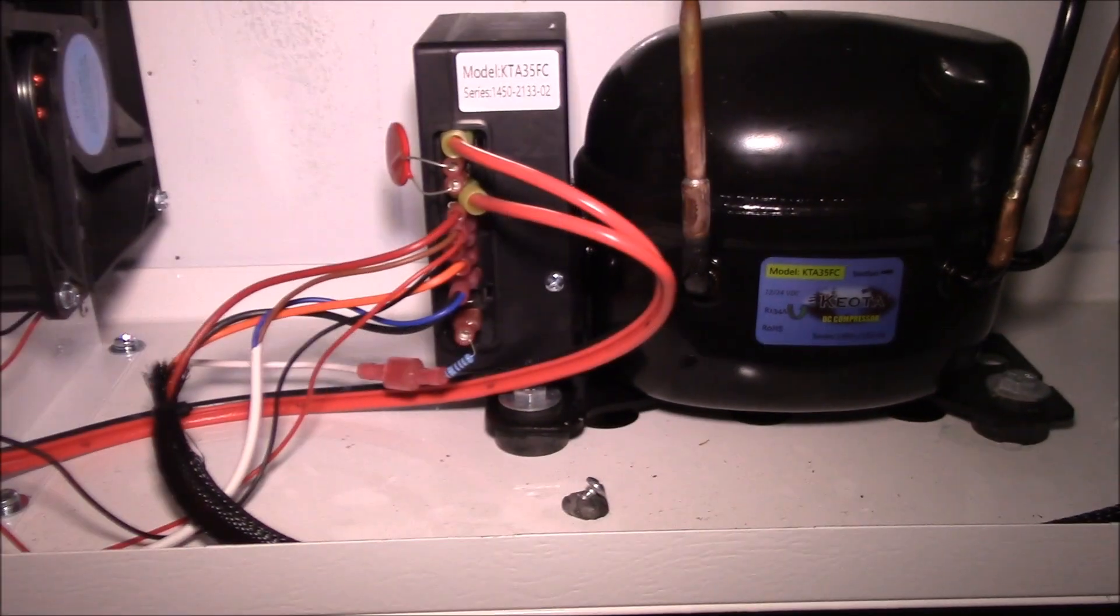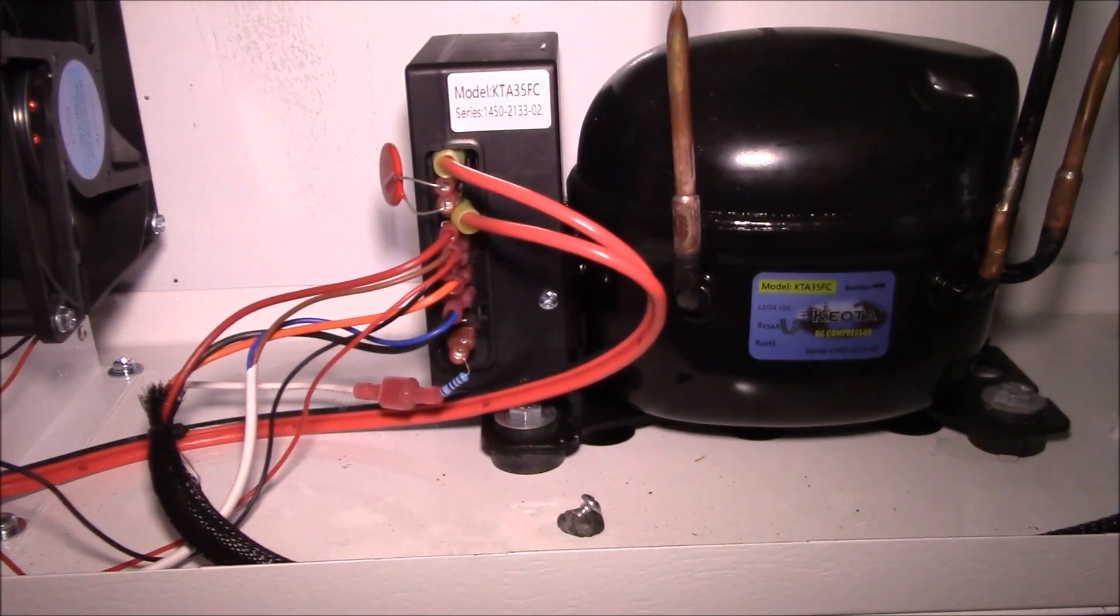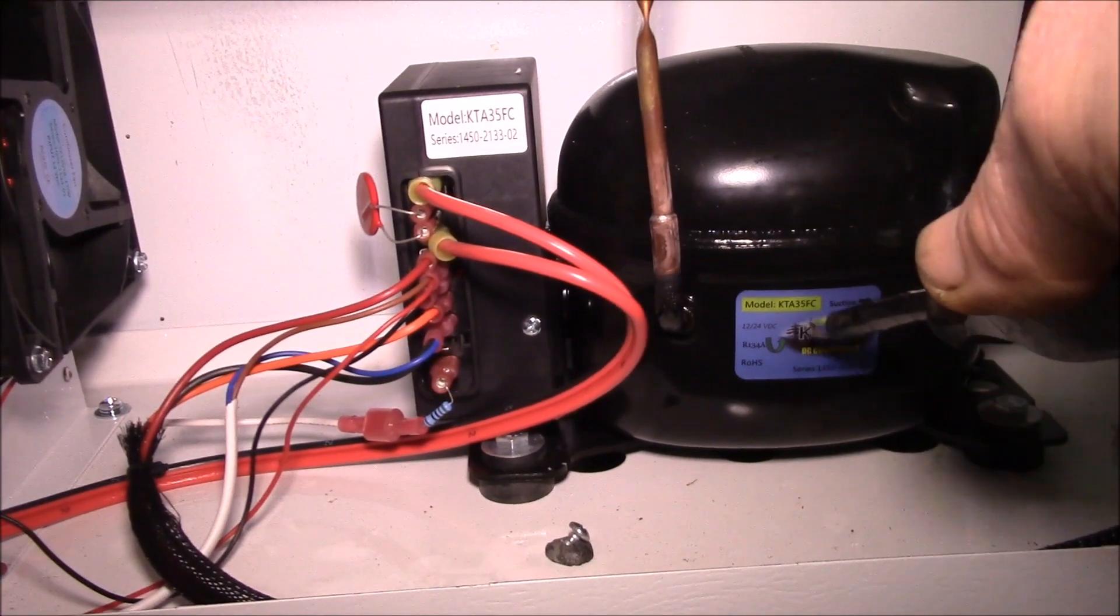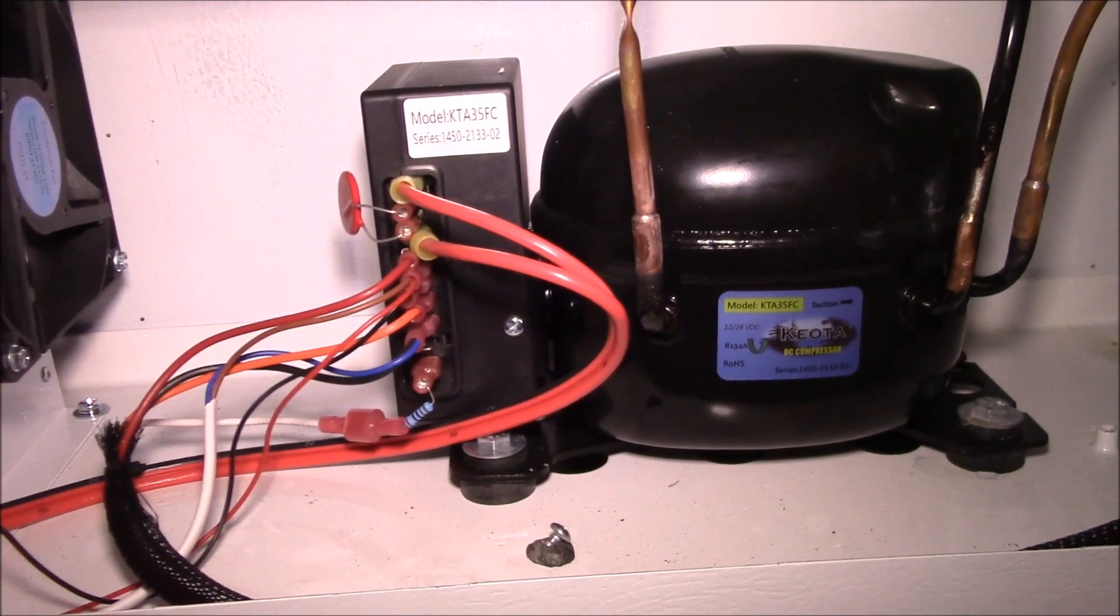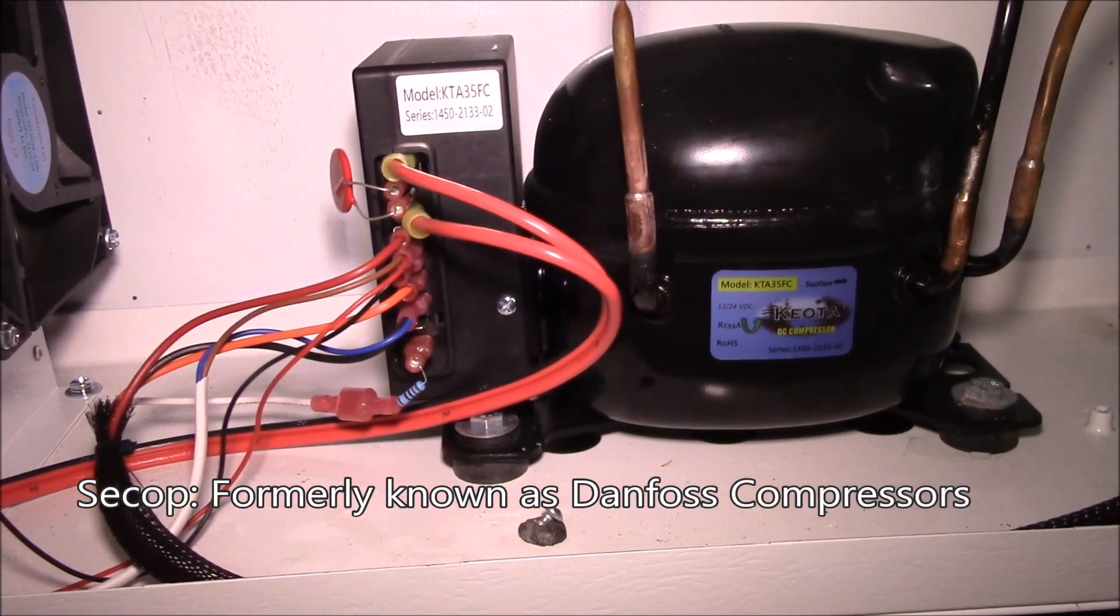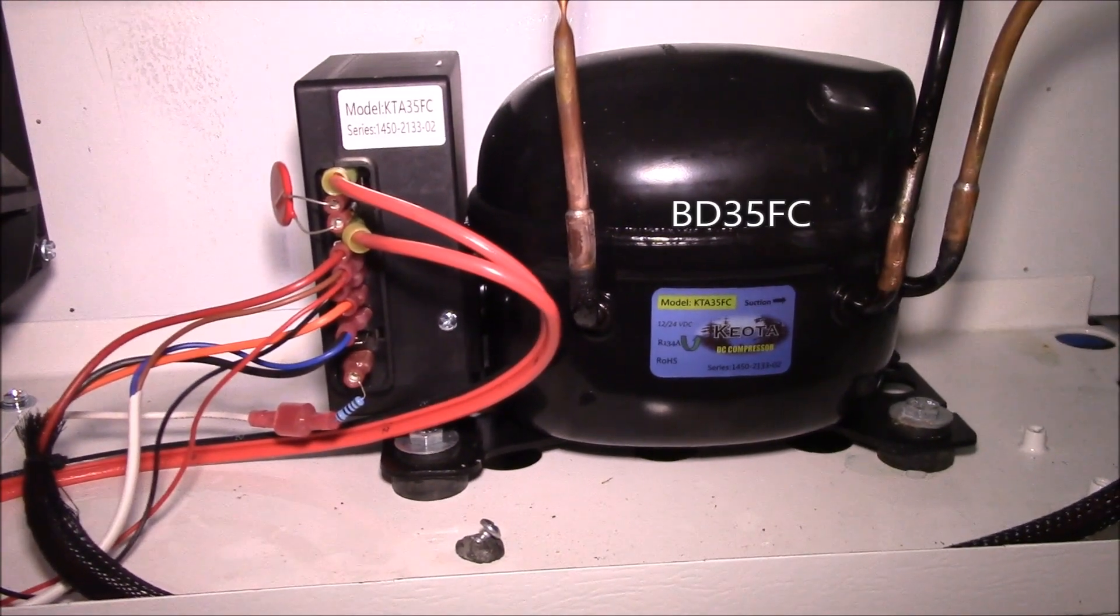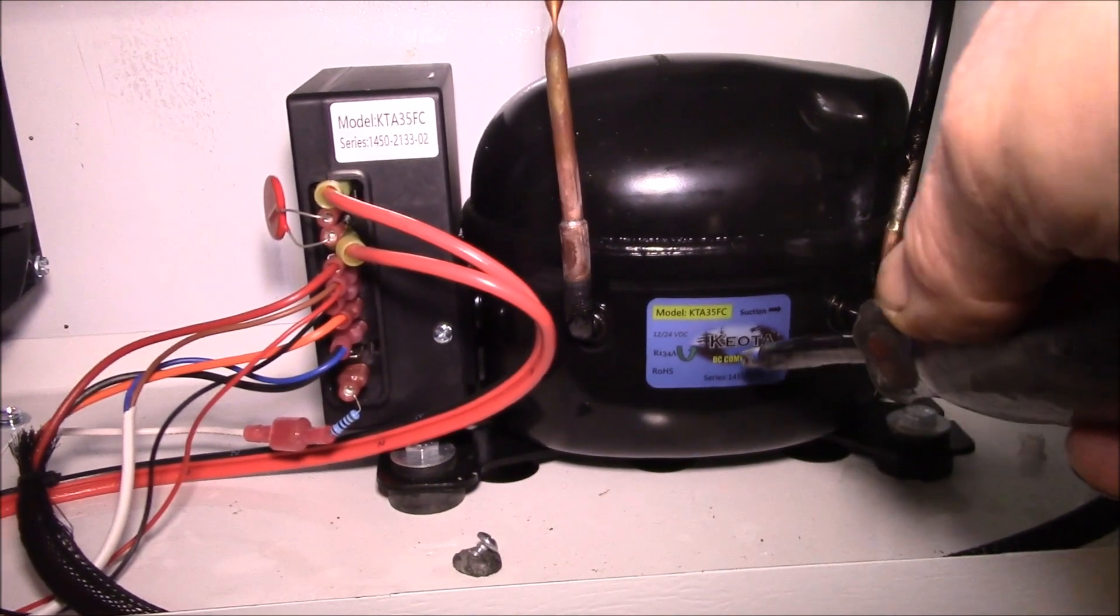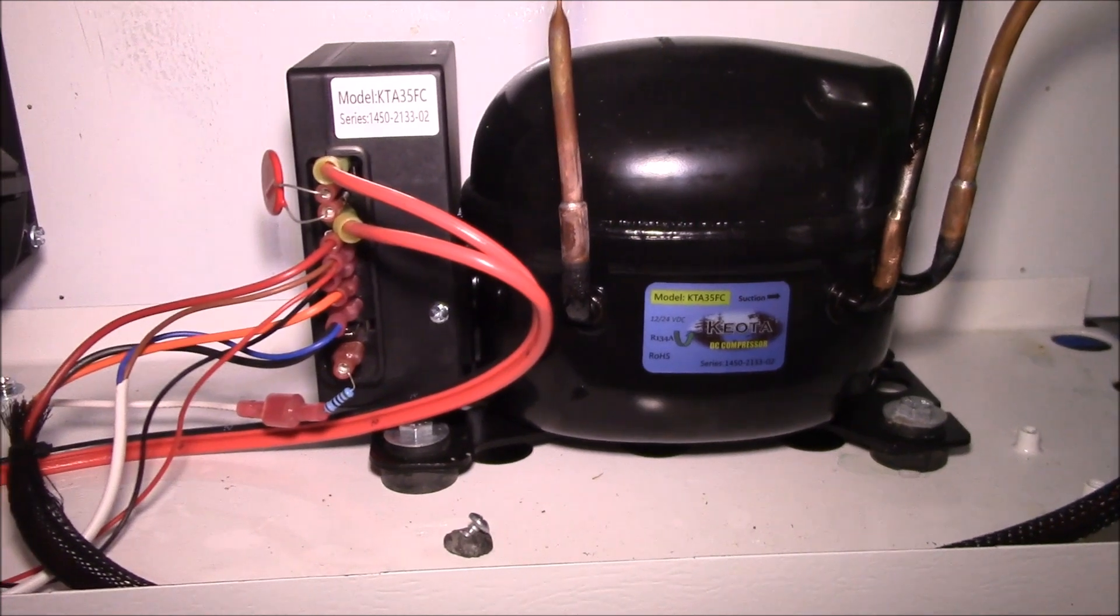Good afternoon YouTube. We're taking a look here in the side access panel of the Sunstar freezer. One of my viewers pointed out that this is probably a compressor made under either the Danfoss or Seacop brand. The Danfoss number would be a BD35F.